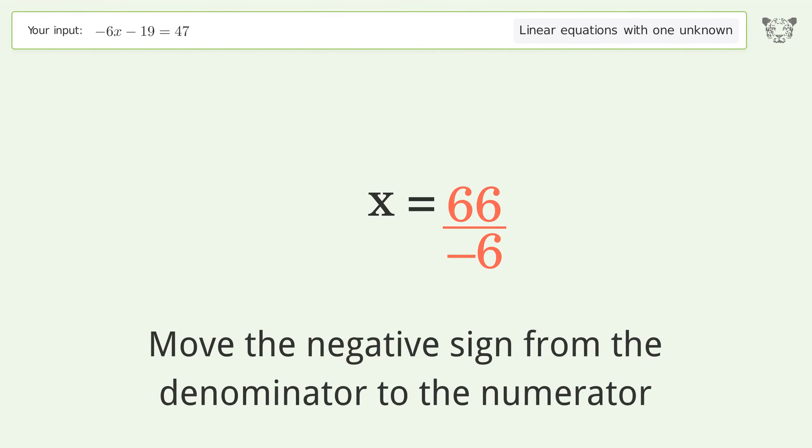Find the greatest common factor of the numerator and denominator. Factor out and cancel the greatest common factor.